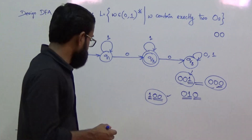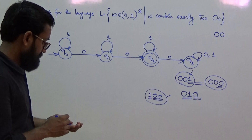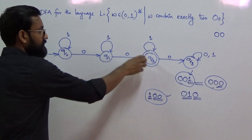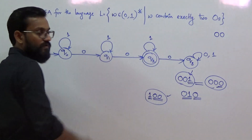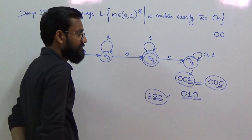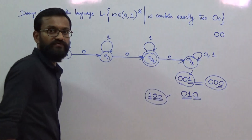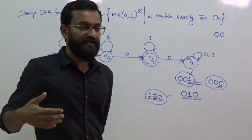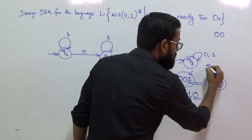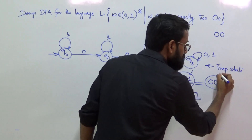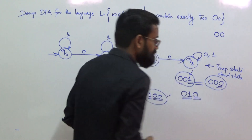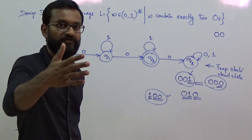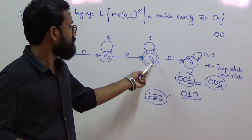Analyzing the transitions: q2 is reachable from q0, from q1, and from q2 itself. But q2 is not reachable from q3 — once the machine enters q3 it cannot move back to q2. This indicates that q3 is a trap state, also called a dead state. If an invariant string is encountered, the machine goes to the trap state and never returns to the final state.